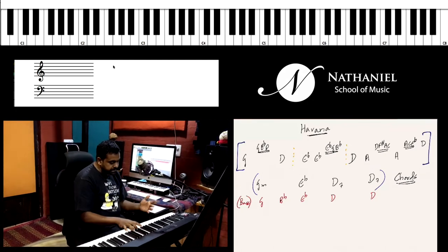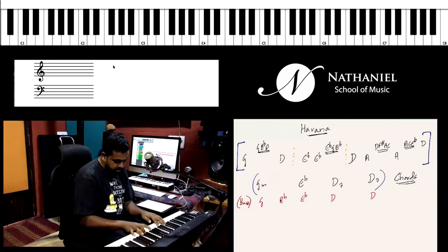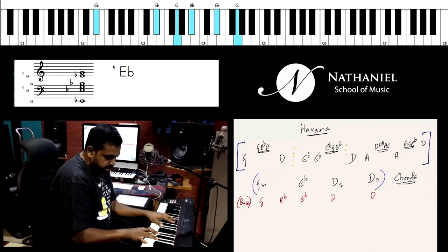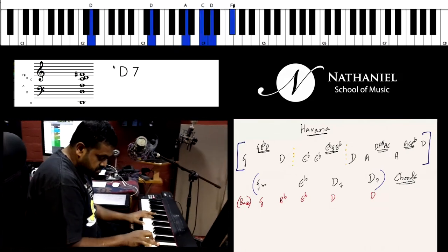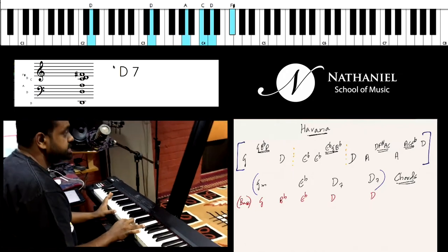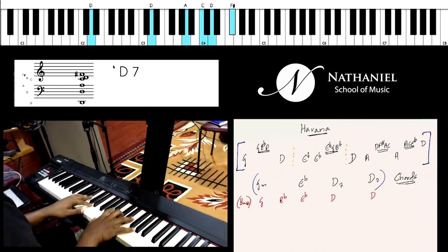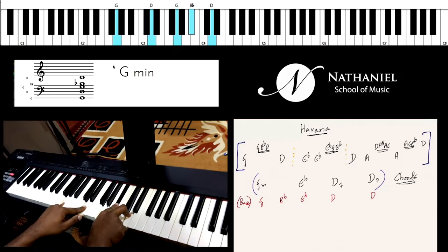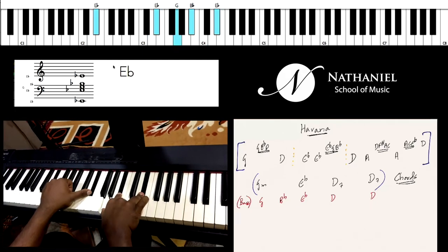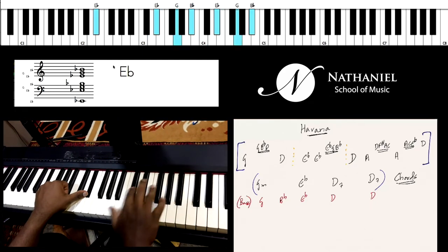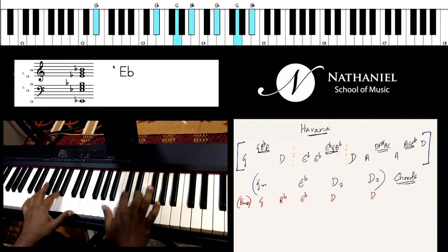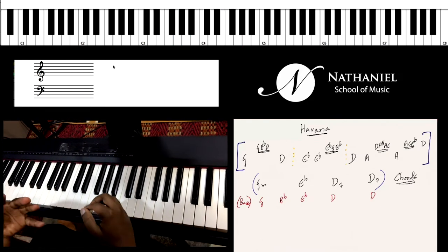G minor, E flat major, and D seventh. So G minor: G, B flat, D. E flat major: E flat, G, B flat. And then D seventh is a very interesting chord. It adds some buildup or tension to the music and makes the sound very interesting.